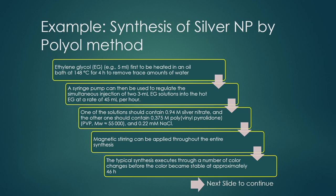Let us have an example of synthesis of silver nanoparticles by the polyol method. Ethylene glycol — around 5 ml — is first heated in an oil bath at 148°C for 4 hours to remove trace amounts of water. Then a syringe pump is used to regulate simultaneous injection of around 3 ml of ethylene glycol solutions into the hot ethylene glycol at 148°C at a rate of 45 ml per hour.